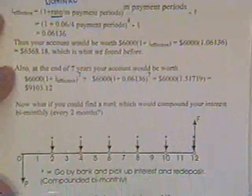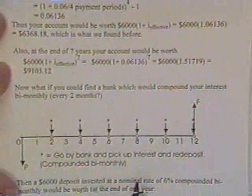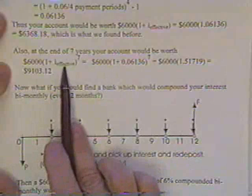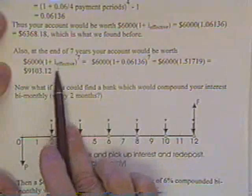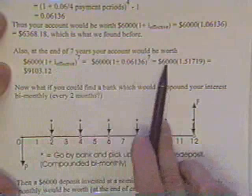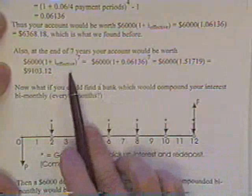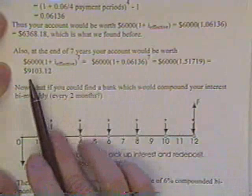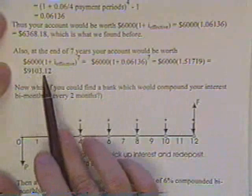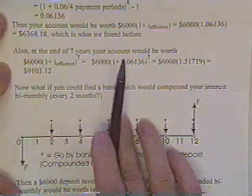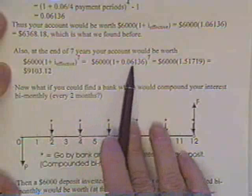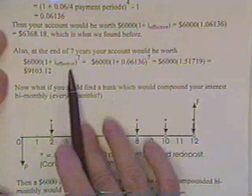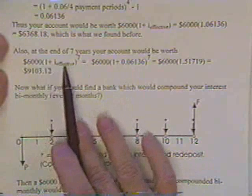Now if you did that same thing for seven years, then the account is worth—here again you use the effective rate and work it out. Incidentally, you could also use the tables for this. That would be $9103. Now you can't use the tables for this because they don't have a rate for 6.136, so you're going to have to use the equation for I_effective.